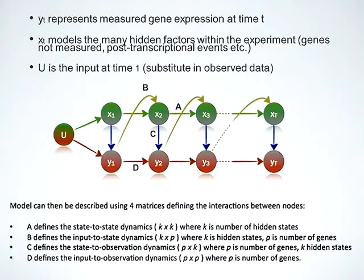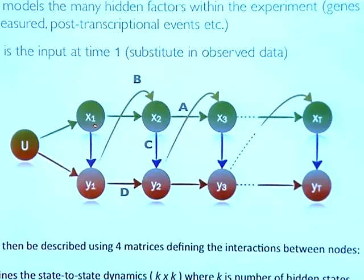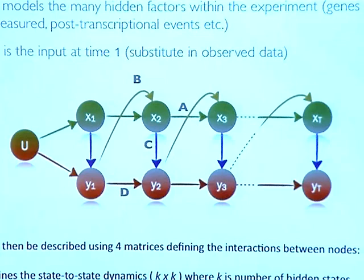Diagrammatically: U is the initial state of the network; Y is the gene expression profile of all measured genes over time — time point one, time point two, and so on; X is the state of the hidden states at each time point. VBSSM says the expression of genes at time point one can influence expression at time point two, either directly or indirectly via hidden states, and hidden states can influence each other directly. It takes all those interactions into account to come up with a predictive model from the set of genes you provide.